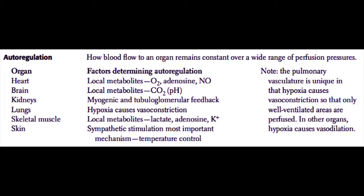In the brain, it's also local metabolites such as carbon dioxide and a resultant drop in pH that determines blood flow — the higher the carbon dioxide, the more blood flow will occur. In the kidneys, the arteries use primarily a myogenic and tubuloglomerular feedback mechanism for determining autoregulation. Myogenic feedback means that as blood pressure increases to the kidney, arterioles will vasoconstrict to protect the fragile glomeruli. Tubuloglomerular feedback means that as blood pressure drops in the kidney, the tubuloglomerular apparatus senses that and increases blood flow by causing vasodilation.